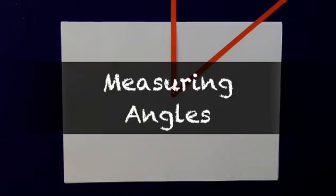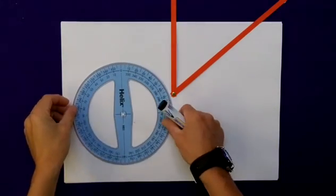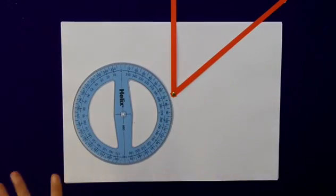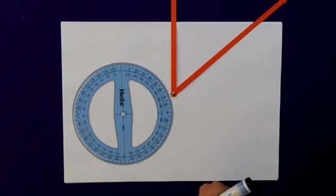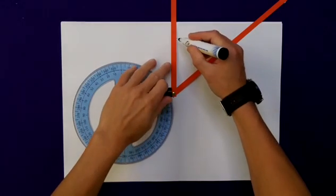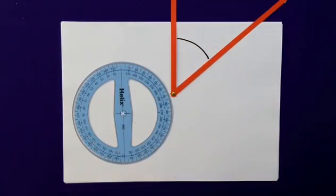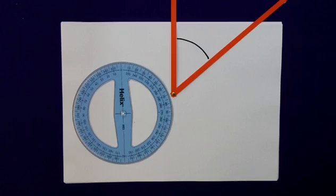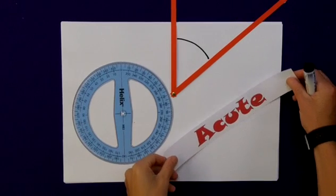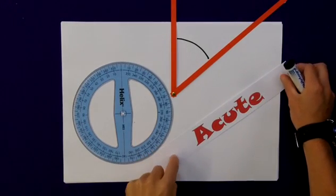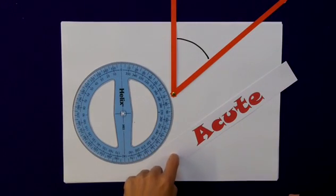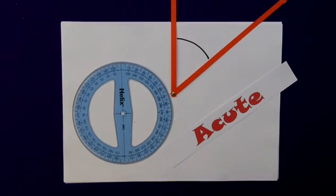Measuring angles with an angle measurer — it is worth doing exactly the same exercise as we've just done. Have an initial guess at your angle. How big do you think that angle is? From my classification, I know that that is an acute angle — it is less than 90. In fact, I would hazard a guess at probably 50 to 60 degrees.